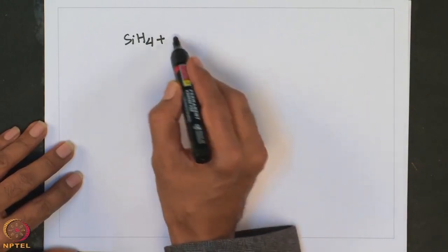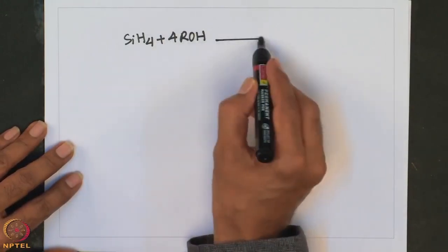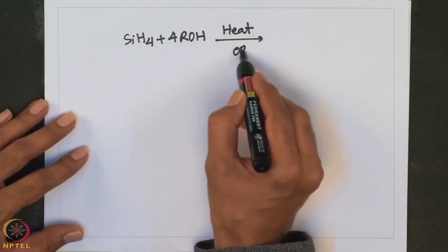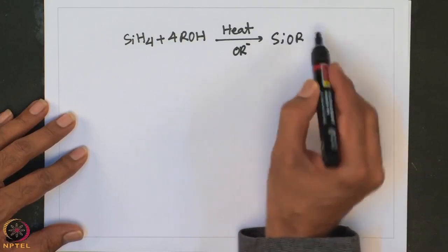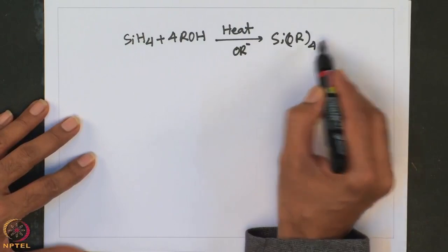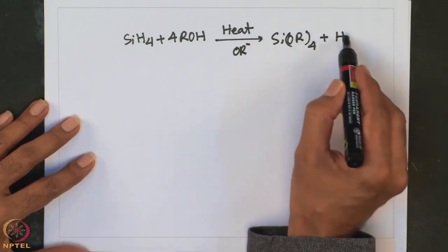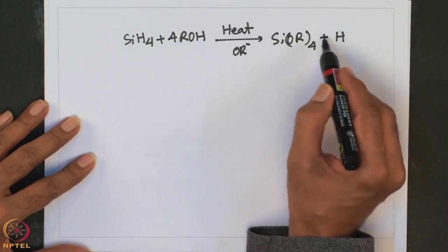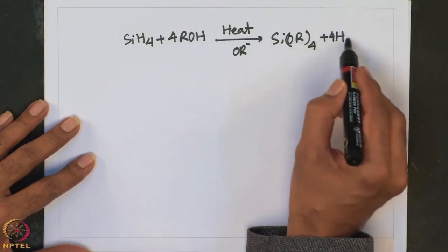For example, SiH4 when treated with four equivalents of an alcohol on heating in the presence of a small amount of alkoxide gives alkoxy derivatives. Kinetic studies indicate that the reaction proceeds through a structure in which OR attacks the silicon atom while H2 is being formed via a kind of H–H hydrogen bond between hydridic and protic H atoms.